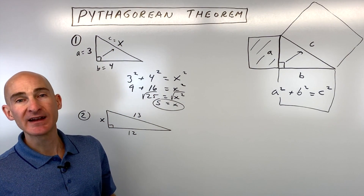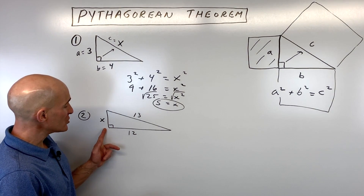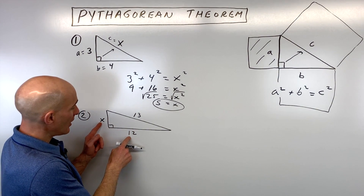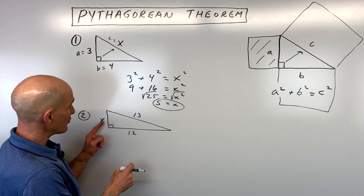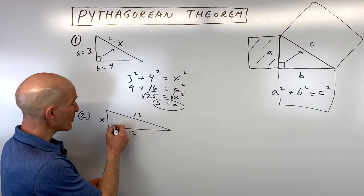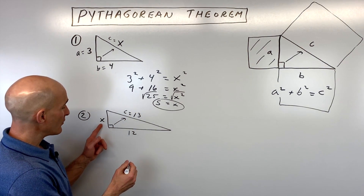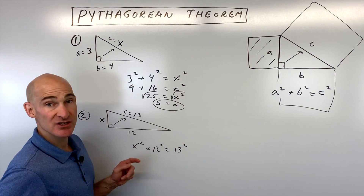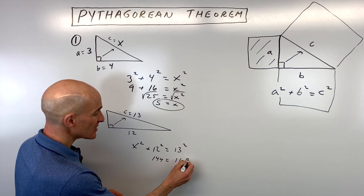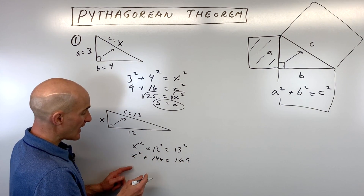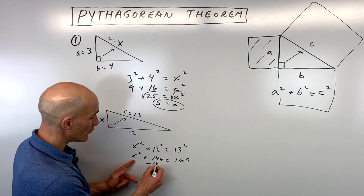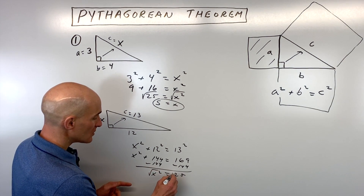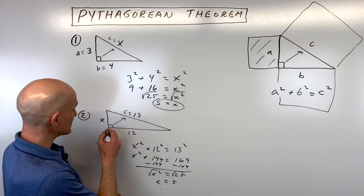Let me show you another example where you're solving for the leg now — sometimes this confuses students. For example number 2, you want to make sure that you get a, b, and c correctly. Remember, a and b are the two sides that make up the right angle, and it doesn't matter whether you call this side a or this side b, but the important thing is that the one across from the right angle is your c side. So now we've got x squared plus 12 squared equals 13 squared. 12 squared is 144. 13 squared is 169 — 13 times 13. Now we just want to get x squared by itself, so let's subtract 144 from both sides of the equation. We're getting 25, and then if we take the square root of both sides, we're getting 5. So that's going to be this missing leg here.